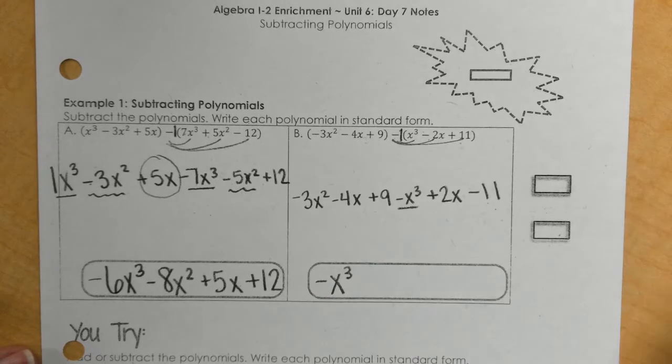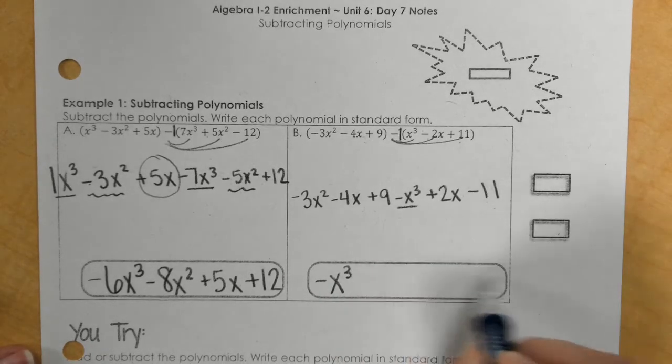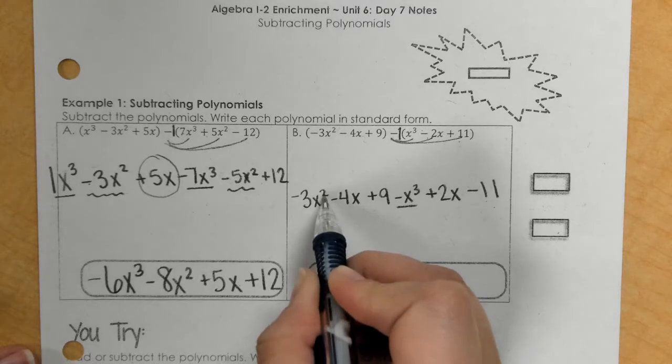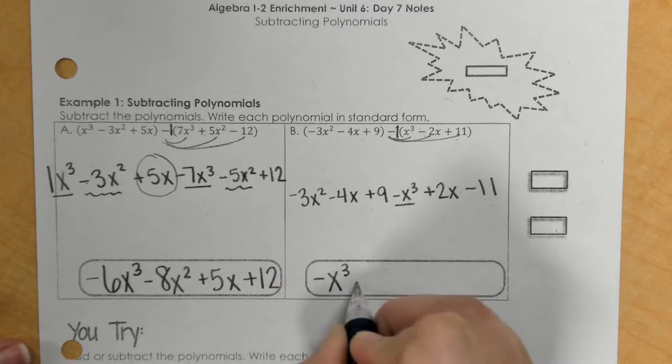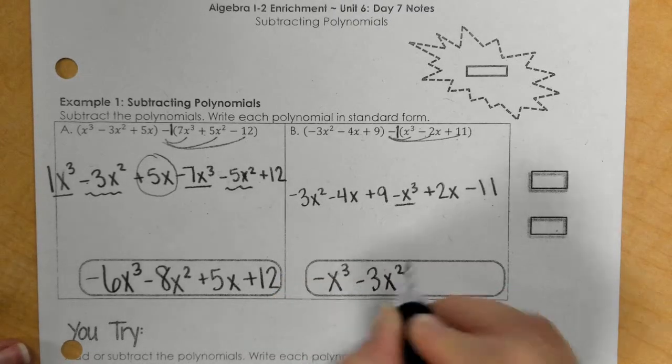So I bring it down. Then, going in descending order, so 3, 2, exponent of 2 is negative 3x squared. And again, I can't combine it with anything.